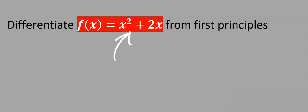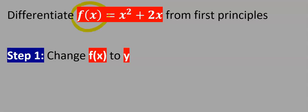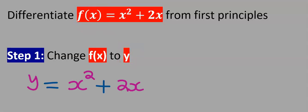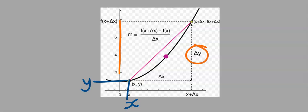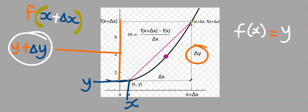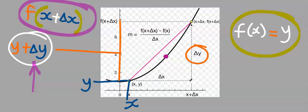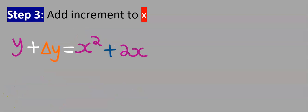Let's consider this question: differentiate this function from first principles. If we differentiate directly from first principles, step number one is to replace f with y — that is, instead of f(x) we have y. Step number two: add increment to y, so y becomes y plus Δy.